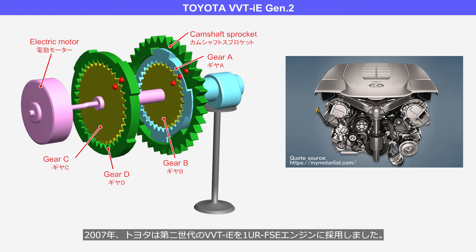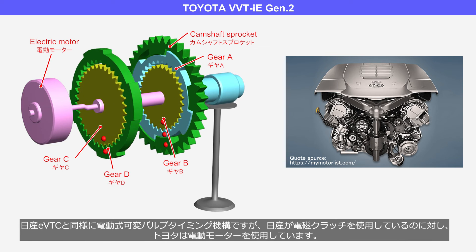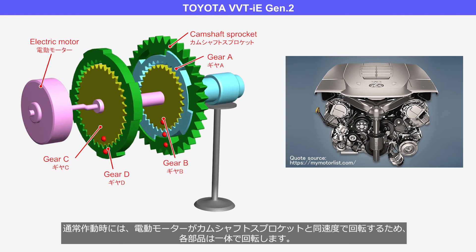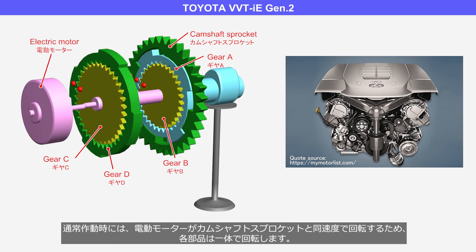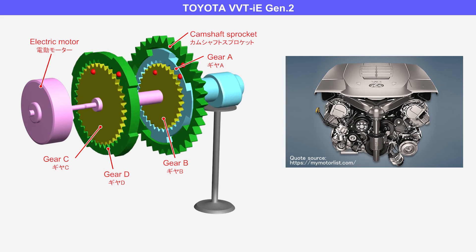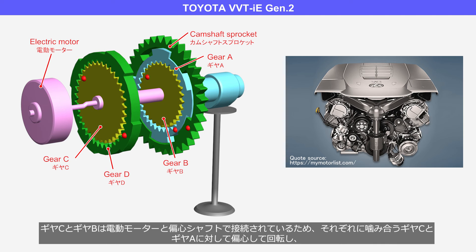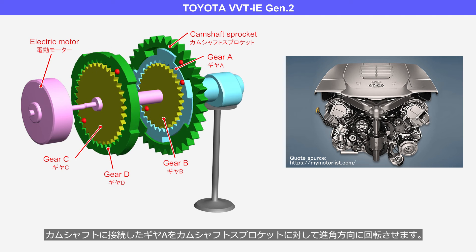In 2007, Toyota adopted the second-generation VVT-iE for the 1UR-FSE engine. Similar to Nissan's EVTC, it is an electrically controlled variable valve timing mechanism. However, while Nissan uses an electromagnetic clutch, Toyota employs an electric motor. During normal operation, the electric motor rotates at the same speed as the camshaft sprocket, causing all parts to rotate together as a unit. During the advancing phase, the electric motor is rotated faster than the camshaft sprocket. Gear C and B are connected to the electric motor via the eccentric shaft, causing them to rotate eccentrically in relation to engaging gears C and A, and they rotate gear A — connected to the camshaft — in an advanced direction relative to the camshaft sprocket.